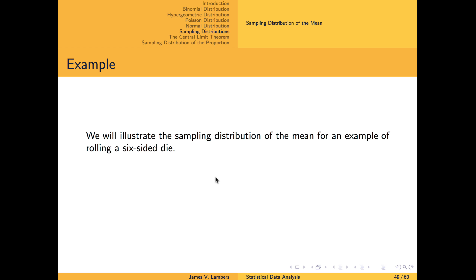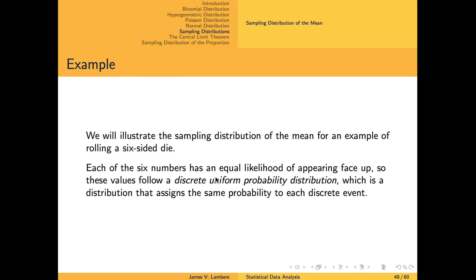To illustrate the behavior of a sampling distribution of a mean, we will work with a simple example of rolling a six-sided die. This experiment has six possible outcomes, each with equal probability, so it follows what is called a uniform probability distribution, which assigns the same probability — in this case one-sixth — to each outcome.